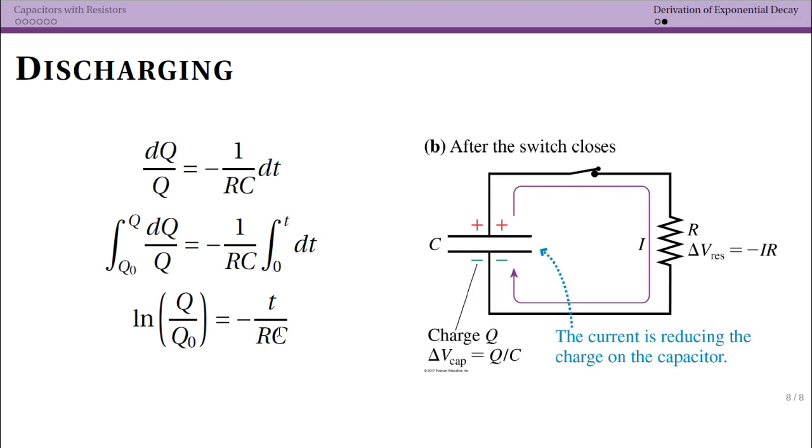So what I'm going to do is raise both sides by e. So I'm putting e to the natural log of Q over Q naught, e to the negative t over RC. Now that would then leave Q over Q naught equals e to the negative t over RC and I can multiply Q naught up and so the final thing I get is this. So Q as a function of t is equal to my initial value of Q, Q naught, times that e to the negative t over RC.